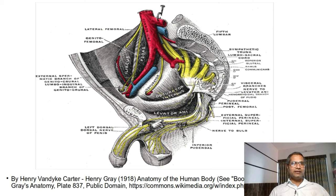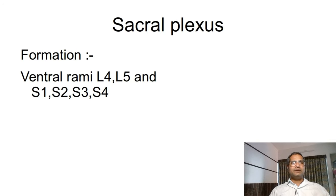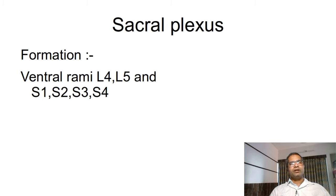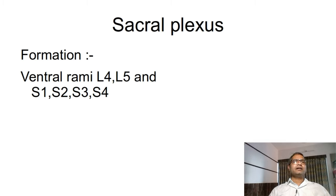Next one is sacral plexus. The sacral plexus is formed by the ventral rami of L4 and L5, and roots of S1, S2, S3, and S4. These nodes are present in relation with the anterior aspect of the piriformis muscle. The sacral plexus gives out branches — both in the pelvis and outside the pelvis.